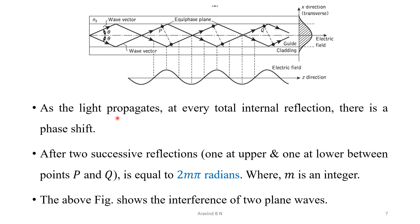As the light propagates, at each total internal reflection, there is a phase shift. If we consider the phase shift after two successive reflections, that is, total internal reflection, that phase shift value will be equal to 2 m pi radians, where m is going to indicate an integer value.